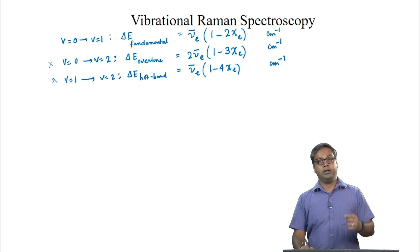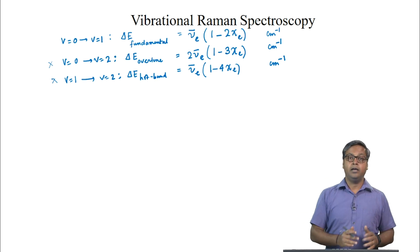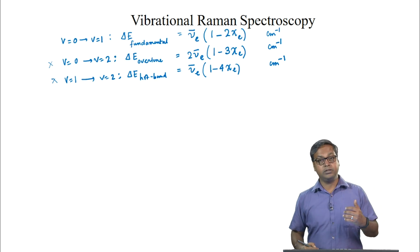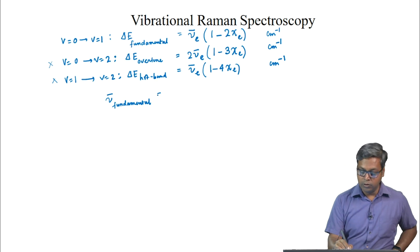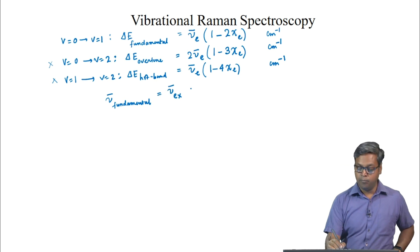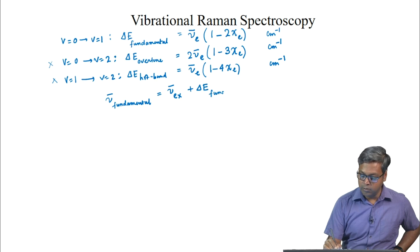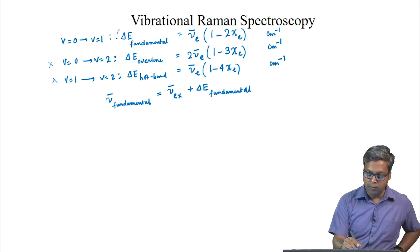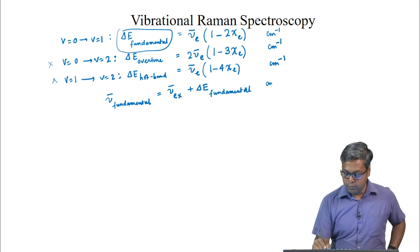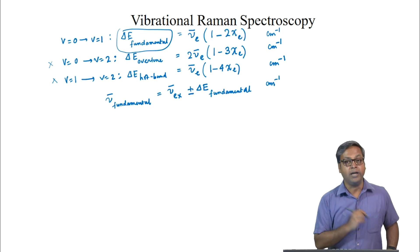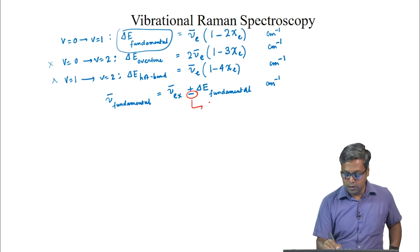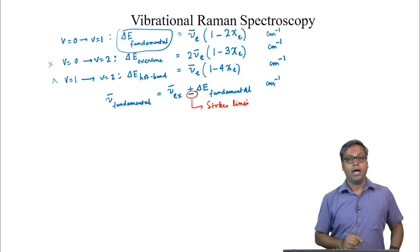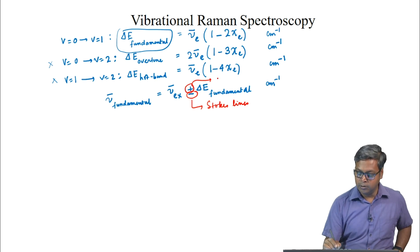The Raman lines appear at distances from the exciting line corresponding to each fundamental vibration. In other words, nu-bar_fundamental equals nu-bar_excitation ± delta E_fundamental, where delta E_fundamental is as written above, in wave numbers. The minus sign represents the Stokes lines and the plus sign represents the anti-Stokes lines.